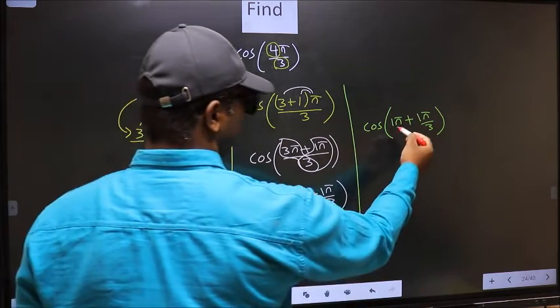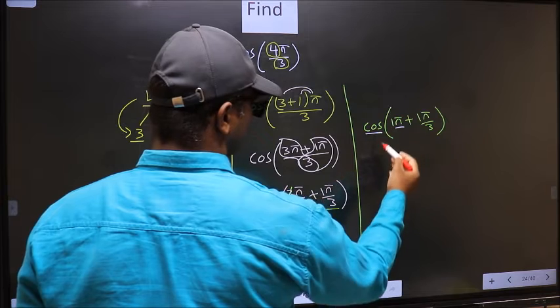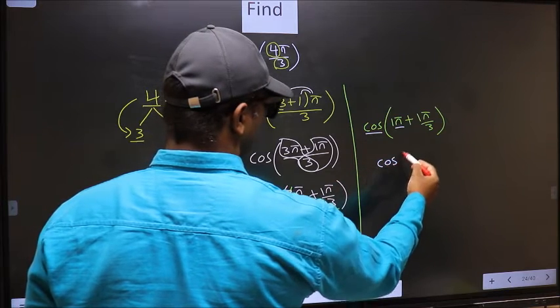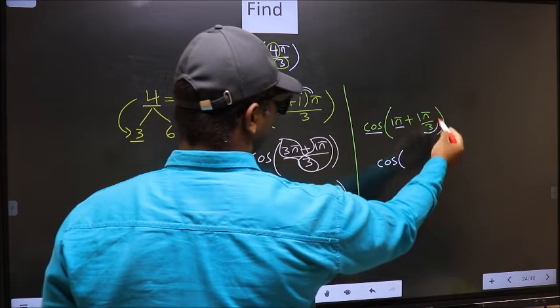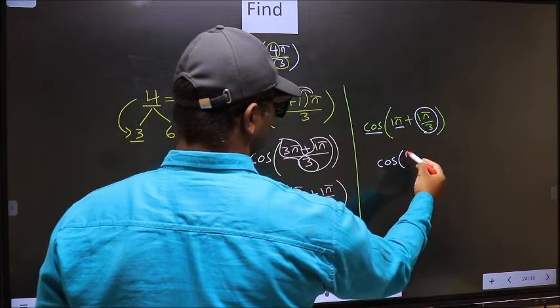Next, here we have π. So cos is not going to change. It will remain cos. And inside, we get this angle π by 3.